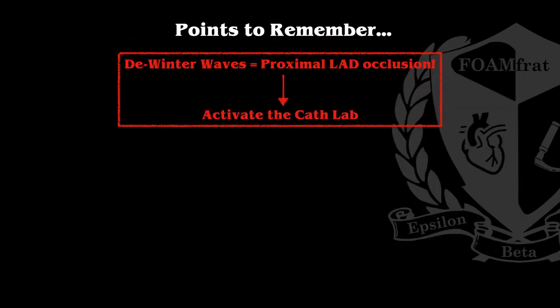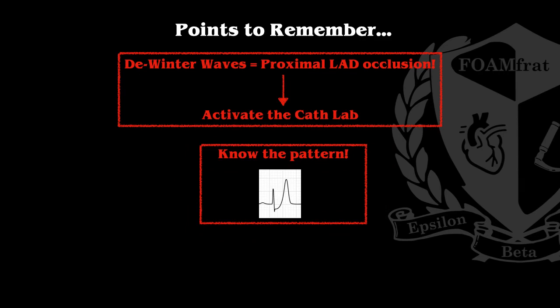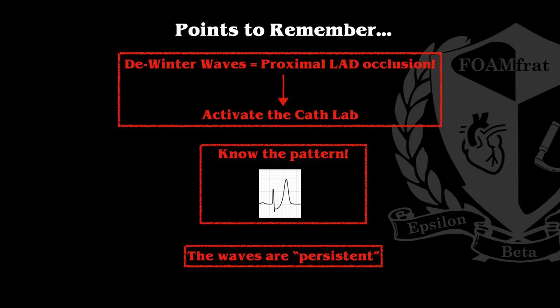Some final points to remember: the DeWinter's T wave is usually indicative of a proximal LAD occlusion, and these patients are not going to meet ST elevation criteria, so we are activating the cath lab. Remember the pattern — upward sloping T wave, peak T wave in relation to the QRS complex — and look for this in the precordial leads, most notably V3 and V4. Finally, these waves are persistent and will exist throughout the course of the ACS. This is a T wave pattern we need to commit to memory: when we see it, we are activating the cath lab.